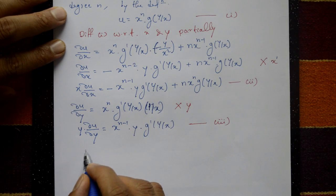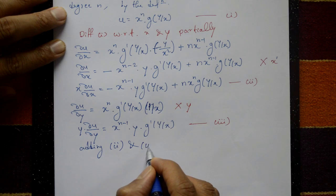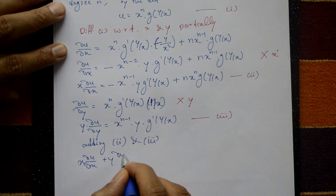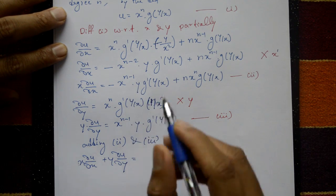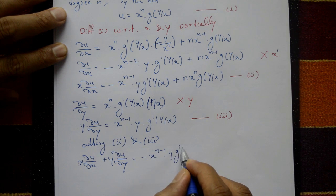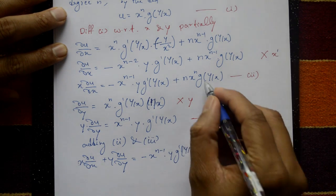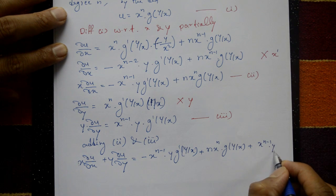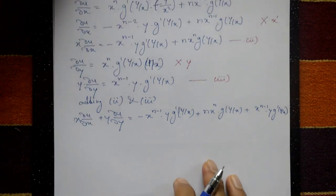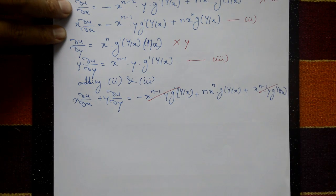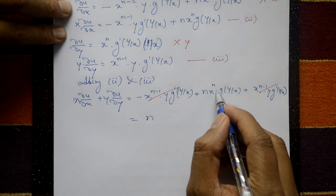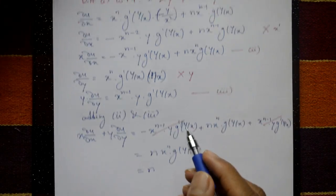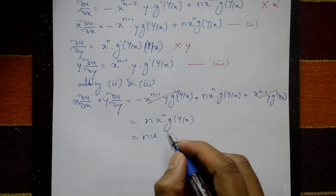Now adding equations two and three. Left hand side: x · ∂u/∂x + y · ∂u/∂y equals minus xⁿ⁻¹ · y · g′(y/x) plus n · xⁿ · g(y/x) plus xⁿ⁻¹ · y · g′(y/x). The plus and minus terms cancel, leaving n · xⁿ · g(y/x), which equals n · u. This is the required result.